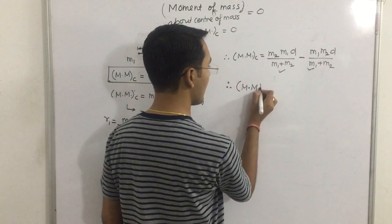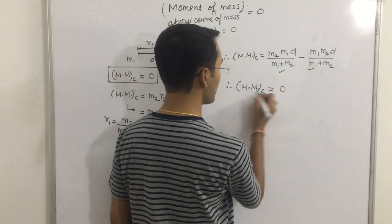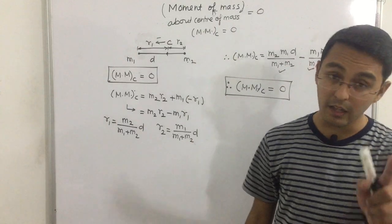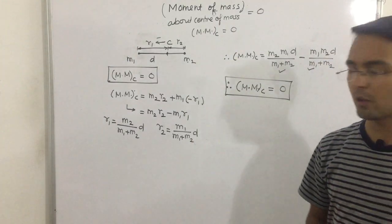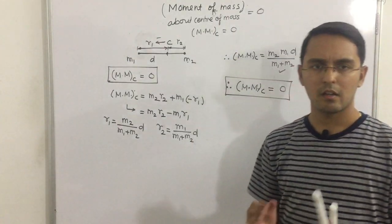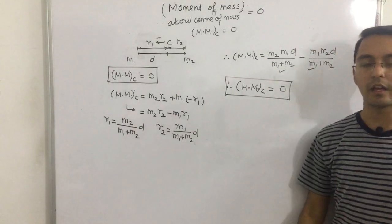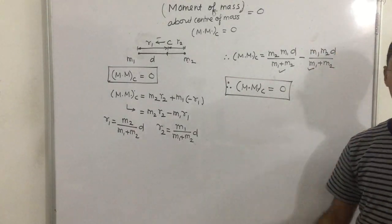Therefore, moment of mass about center of mass is always 0. This property is the theorem of parallel axis. One thing: moment of mass about center of mass is always 0, that's it.